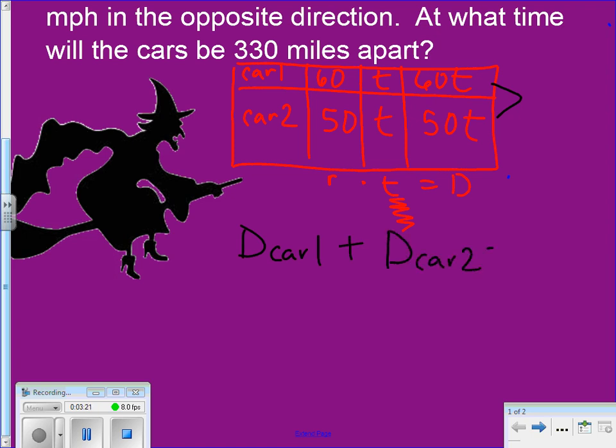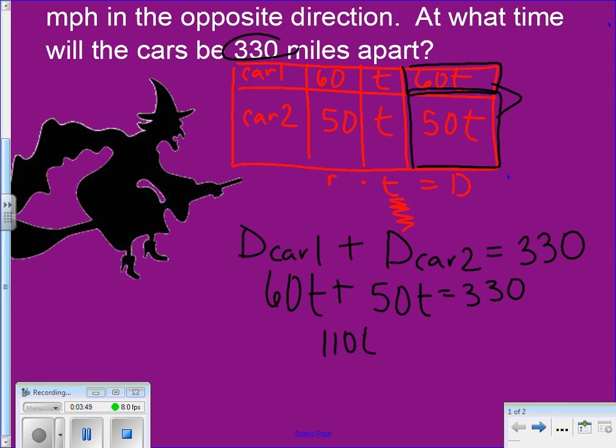So I'm going to take the distance of car one, add the distance of car two, and that should equal the total distance, which I tell you is 330 miles. So now go back and look in your chart. The distance car one traveled is 60t, and the distance car two traveled is 50t. Set that equal to 330. This is an easy equation to solve. I get 110t equals 330.